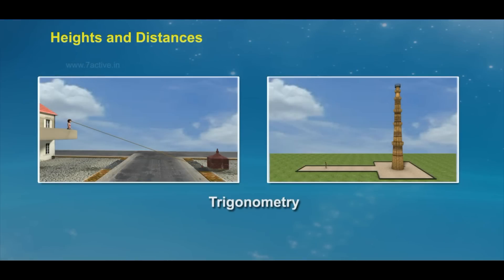We shall now see how trigonometry is used for finding the height and distances of various objects without actually measuring them. Before going to the problem, let us learn about two kinds of angles.